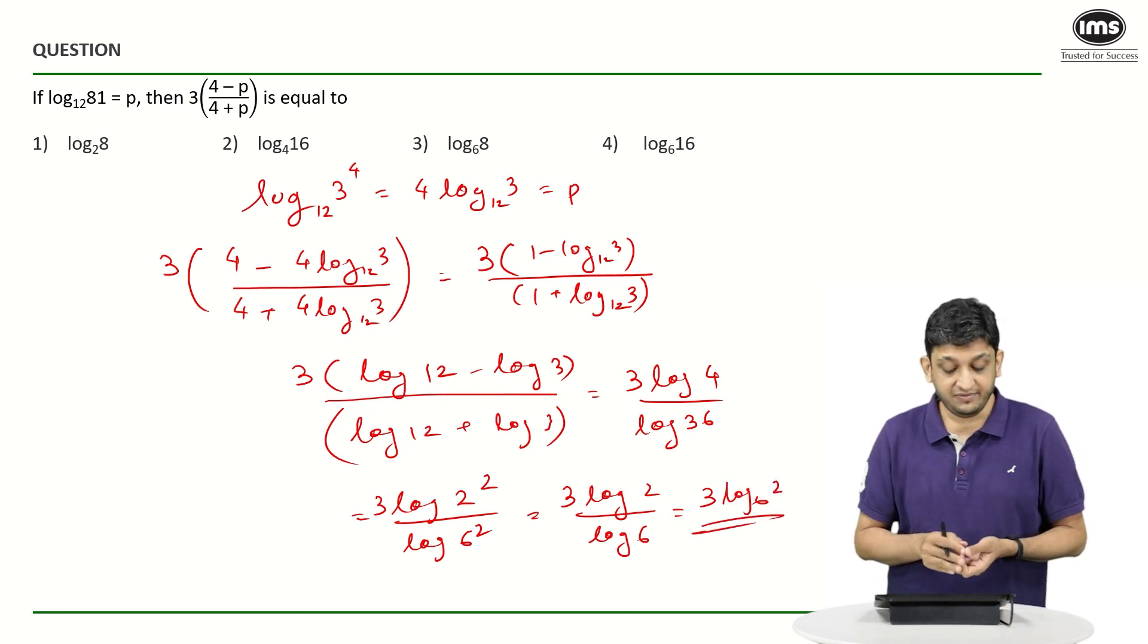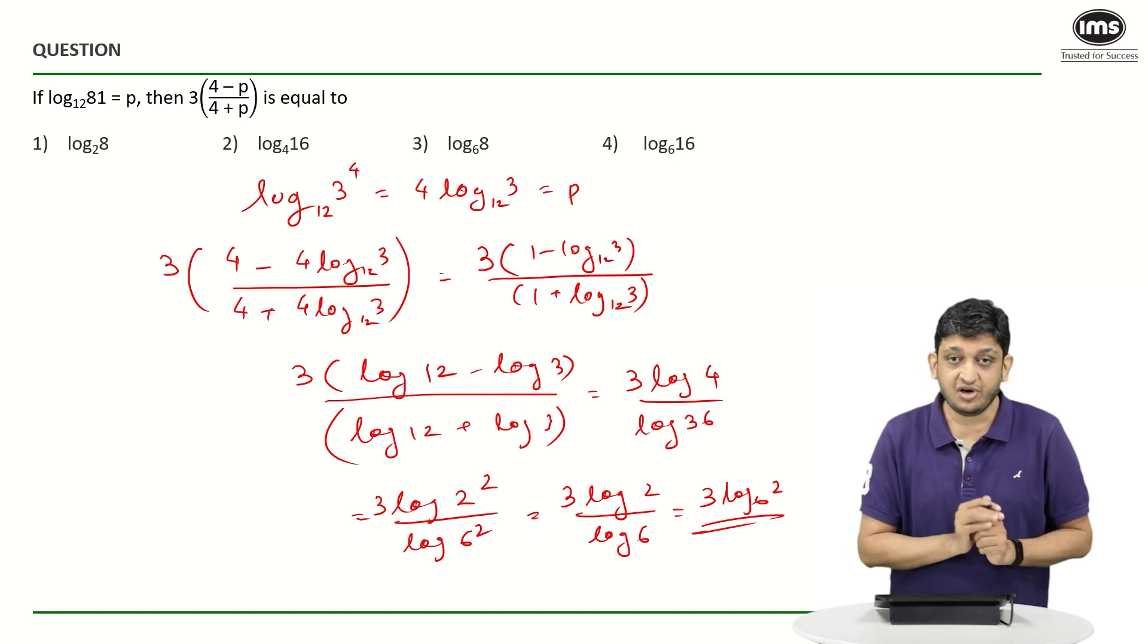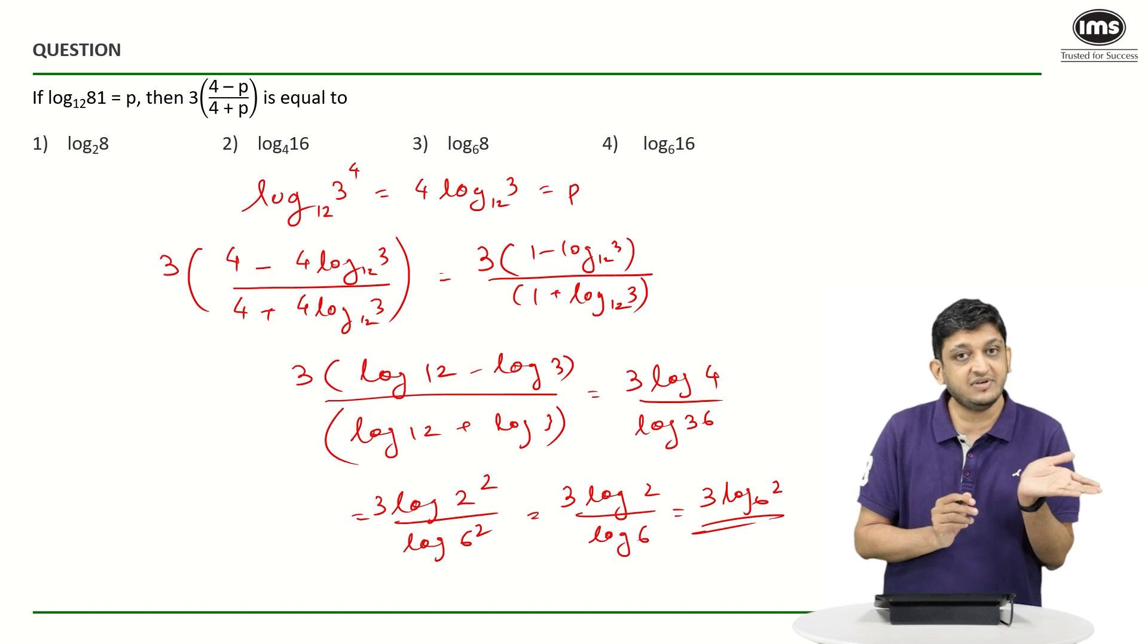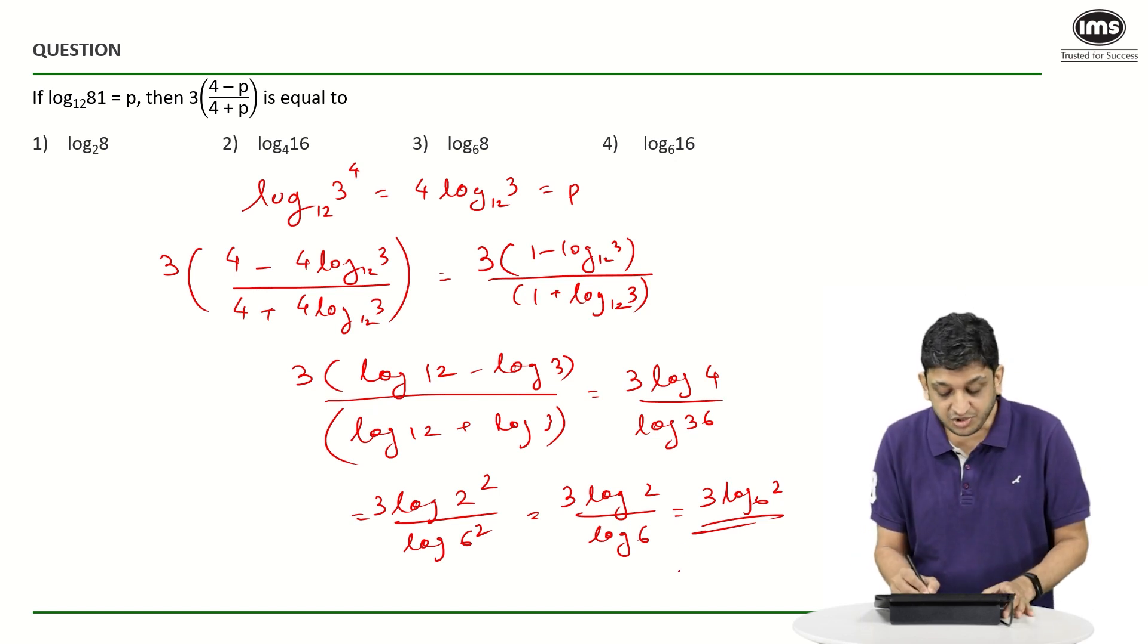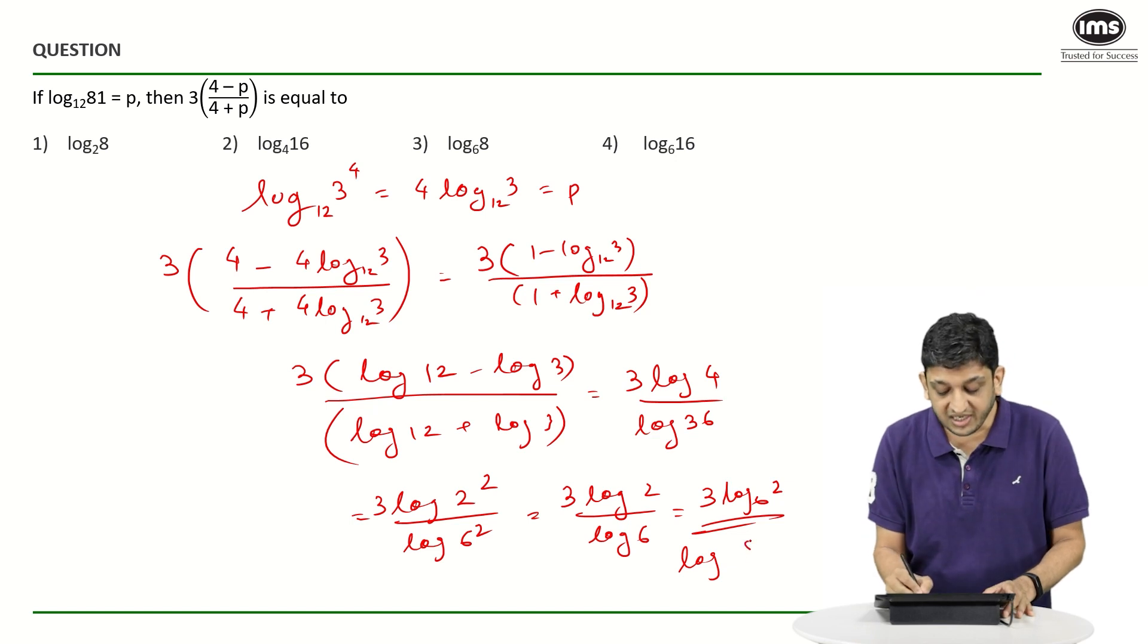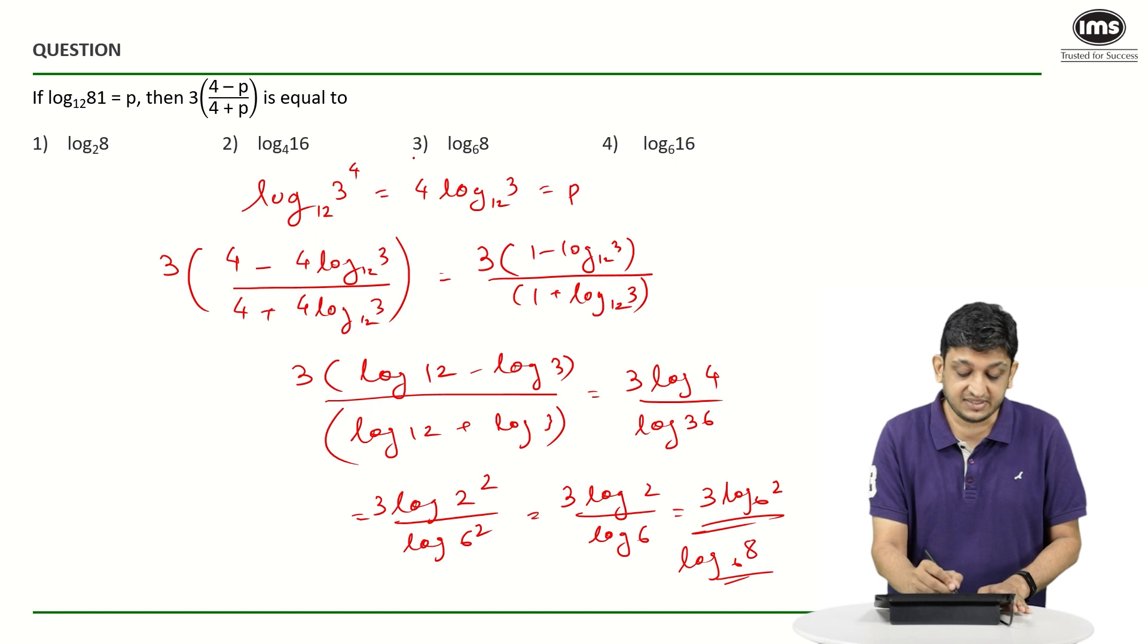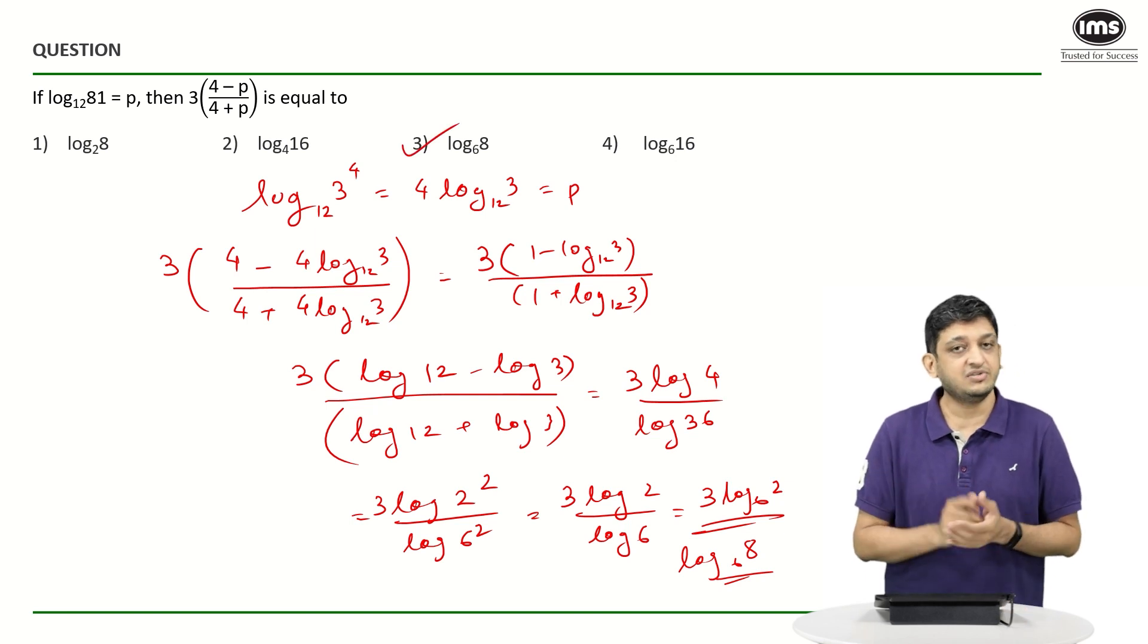If you look at the options that we have here what are we going to get? 3 times log 2 to the base 6 but it is not there in the options. So what we will do is we will take this 3 as a power and so we are going to get log of 2 cubed to the base 6 or log 8 to the base 6. The correct answer here is going to be option 3 that is log 8 to the base 6.